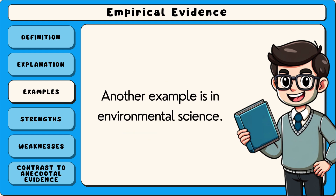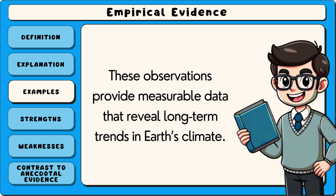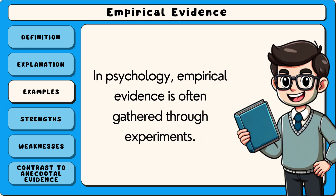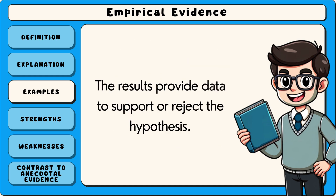Another example is in environmental science. To study climate change, scientists collect temperature records, analyse ice core samples and monitor carbon dioxide levels. These observations provide measurable data that reveal long-term trends in Earth's climate. In psychology, empirical evidence is often gathered through experiments. For instance, researchers might test whether listening to music improves concentration by comparing two groups — one that listens to music while studying and another that does not. The results provide data to support or reject the hypothesis.